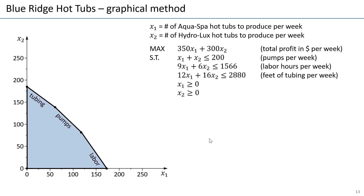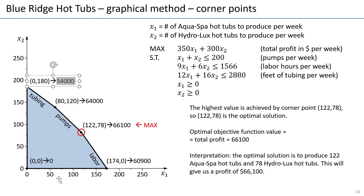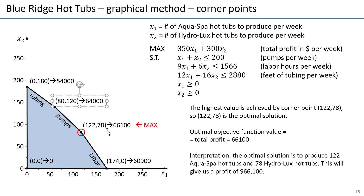Here are all the corner points with their coordinates. For example, this point has x1 equals 0 and x2 equals 180 — you can verify that plugging 0 and 180 into the tubing constraint gives exactly 2880 feet of tubing used. Plugging (0, 180) into the objective gives a profit of $54,000. If you consider the next corner point at (81, 20), the profit is $64,000 — so that is better. It's better to choose that point than the first one.